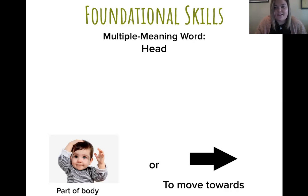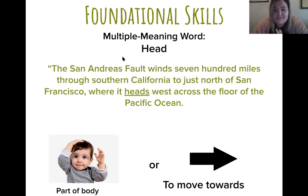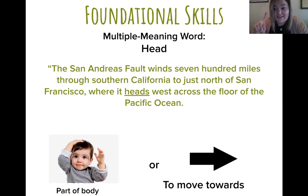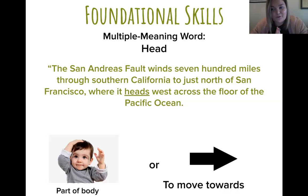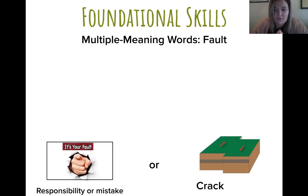There are a lot of words in English that have two meanings. To start, we're going to look at 'heads.' We know we all have heads — but have you ever talked about heading in a certain direction? Let's figure out which meaning is used here: 'The San Andreas Fault winds 700 miles through Southern California to just north of San Francisco, where it heads west across the floor of the Pacific Ocean.' Is it one — the body part — or two — moving forward? It is two: it is heading in a certain direction, moving toward the floor of the Pacific Ocean. Good job, fourth graders!